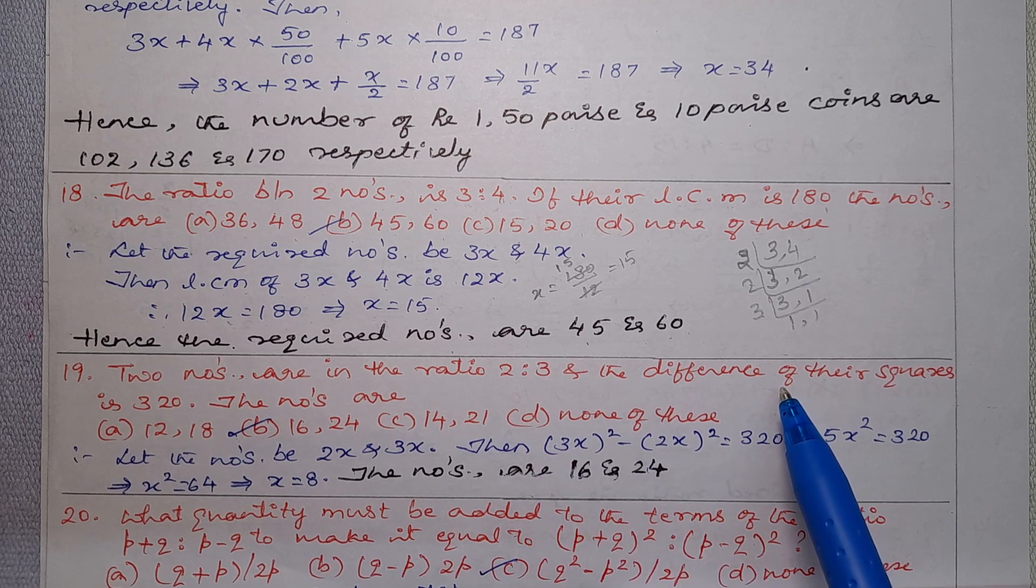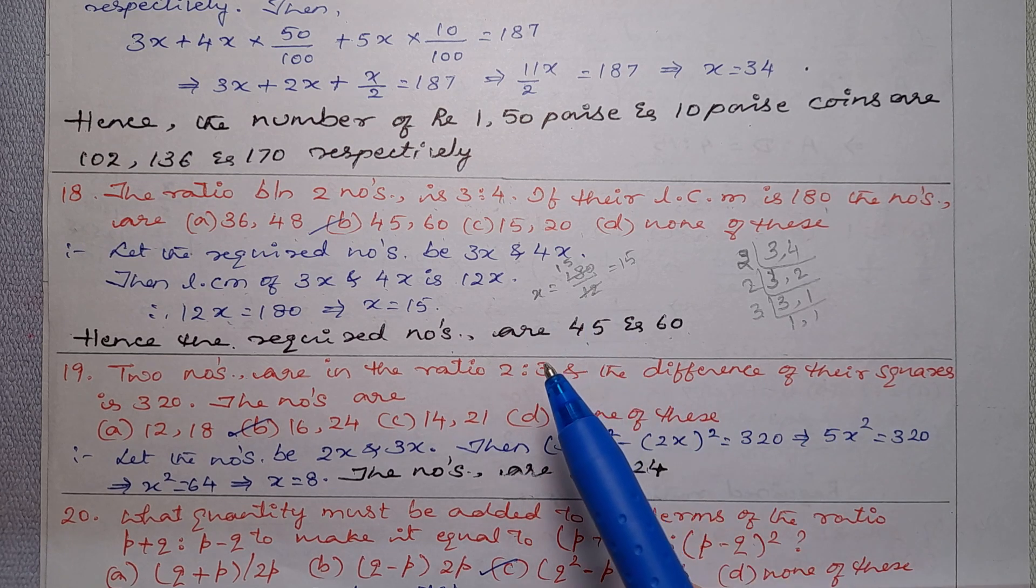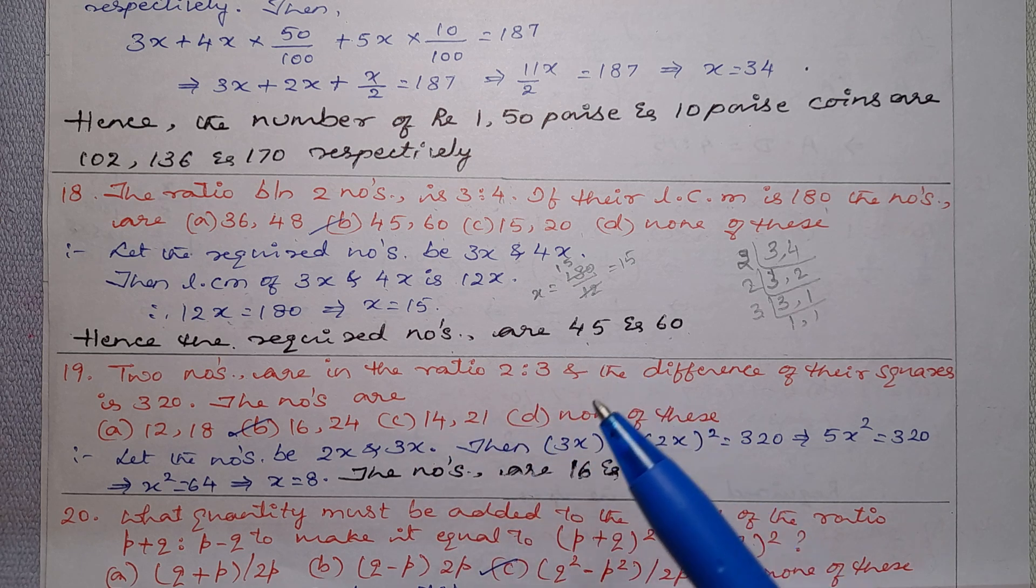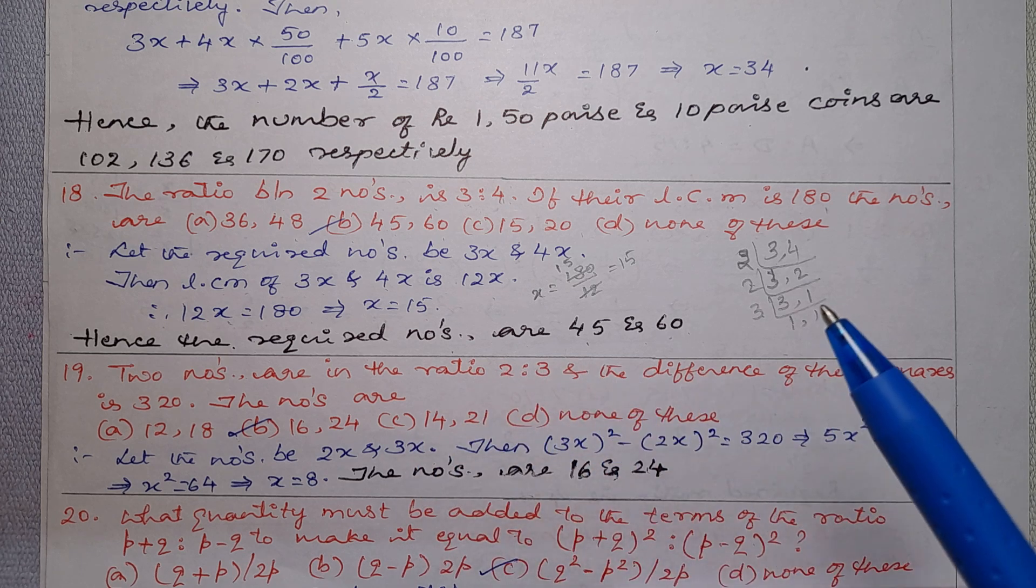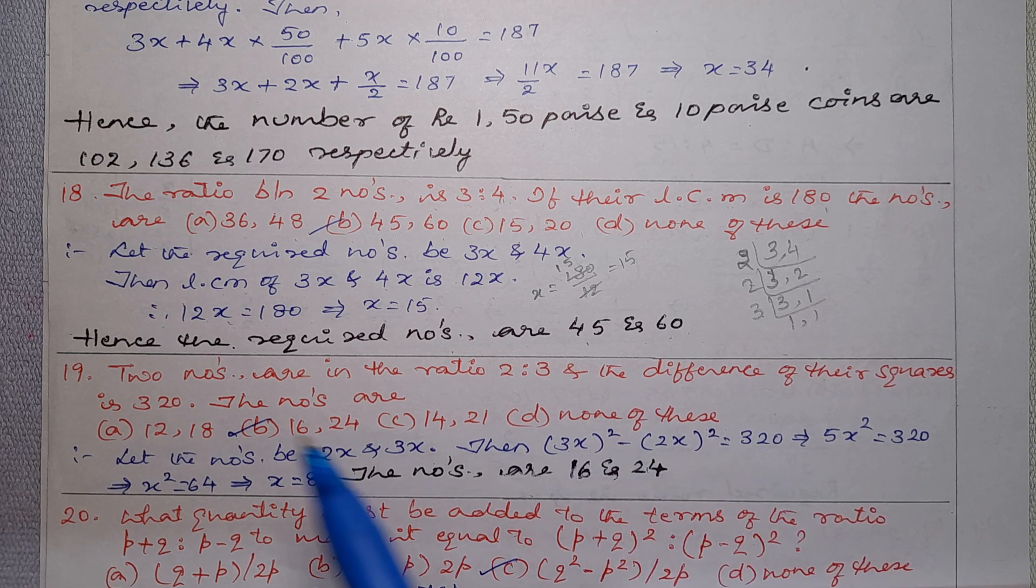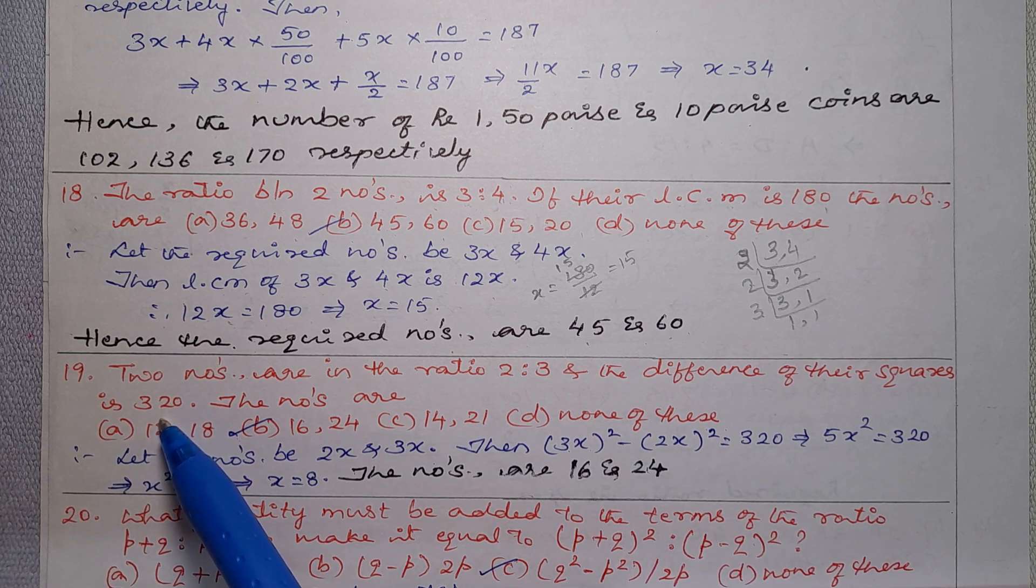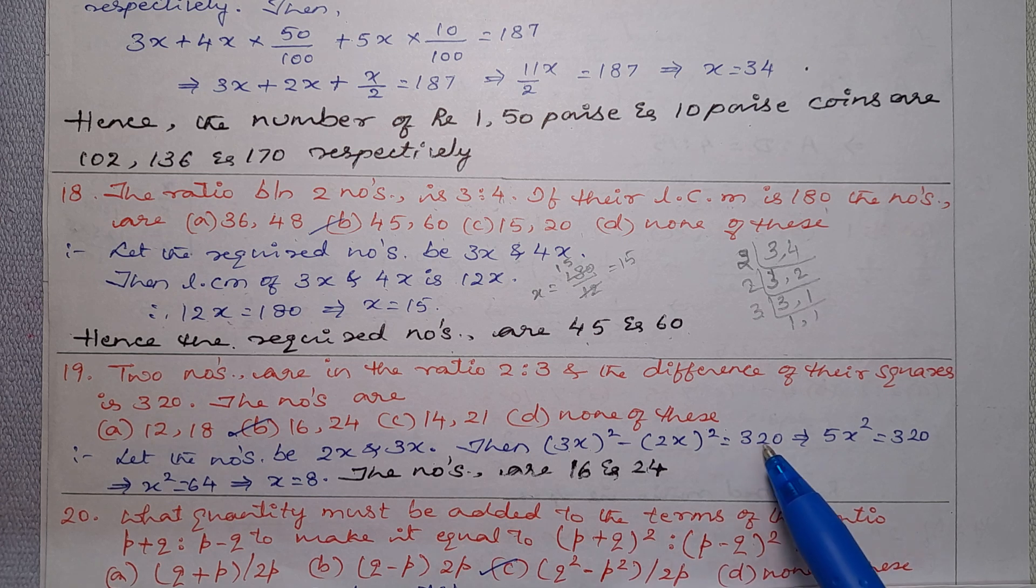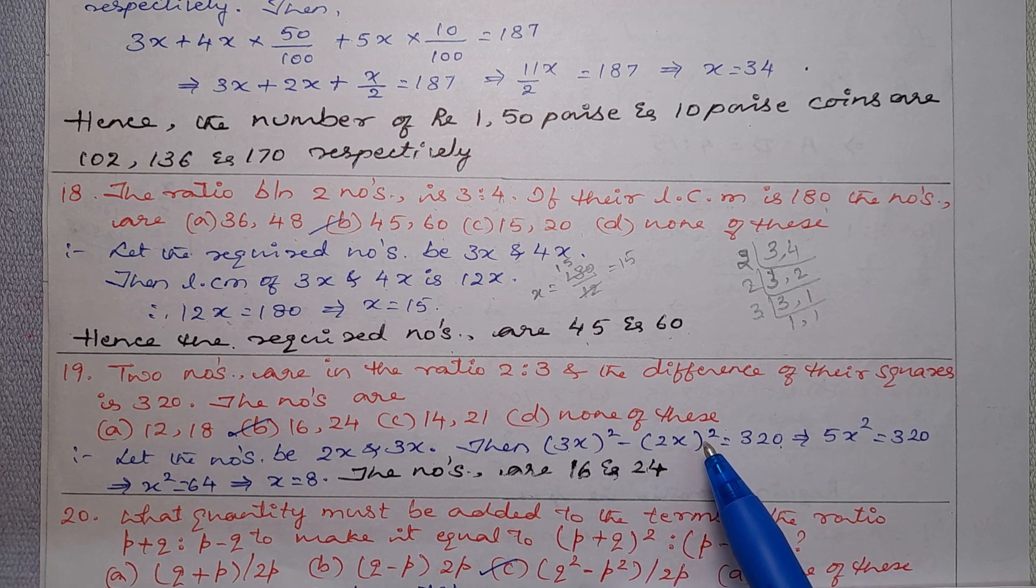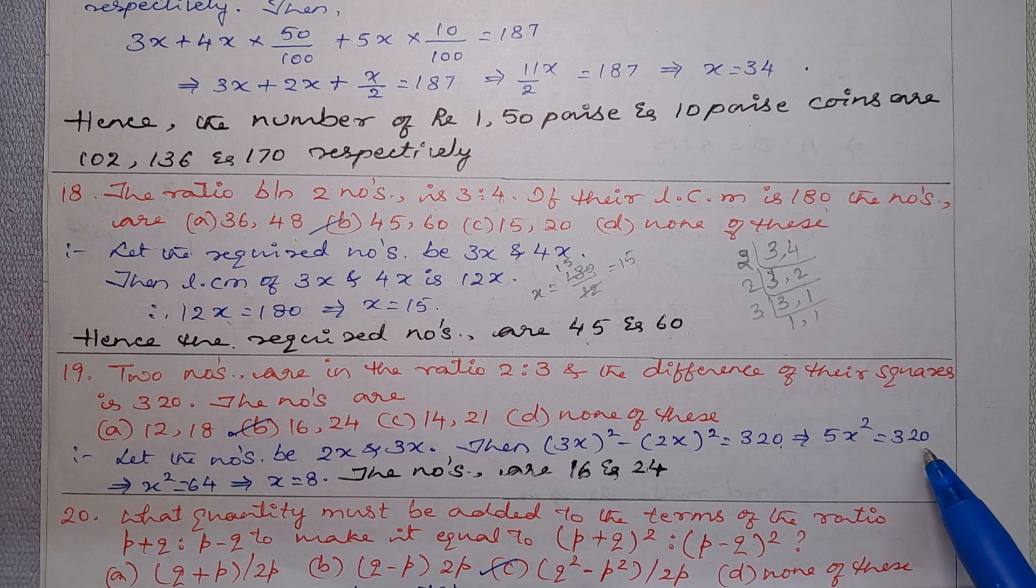Then the difference of their squares. So we have 3x square minus 2x square. So 9x square minus 4x square is 5x square equal to 320.